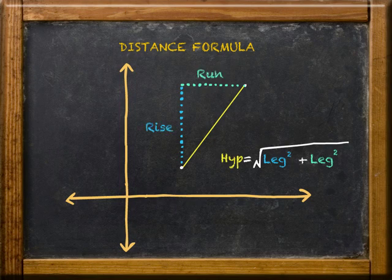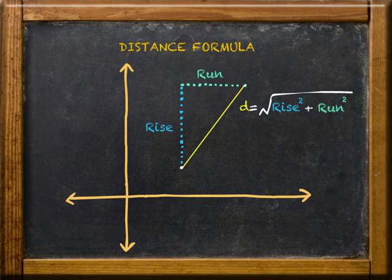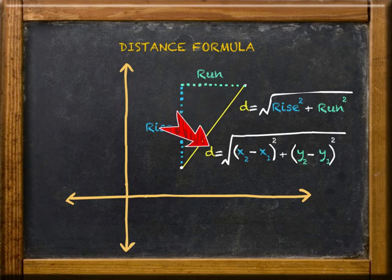Now remember rise and run from our slope calculation? Think of the distance formula as being this. What? That's not the way you've seen it written before? OK, you've probably seen it as this. But they're both really saying exactly the same thing. Take your choice.